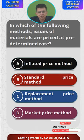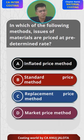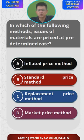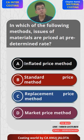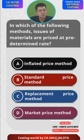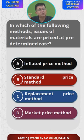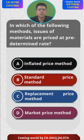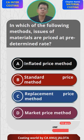FIFO, LIFO — all these are methods for determining the issue price. Under the inflated price method, we consider the level of inflation and issue goods at that price. Standard price means we issue goods at a standard price, which is always predetermined. Replacement price means we issue goods at the price we would need to repurchase from the market. Market price means we issue goods at the current market price. So based on the name itself, standard price is the predetermined price — that should be the answer.